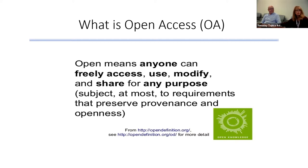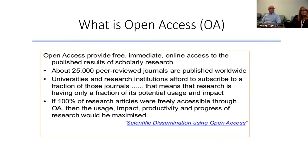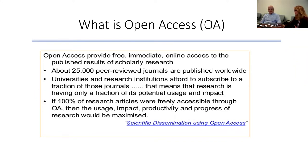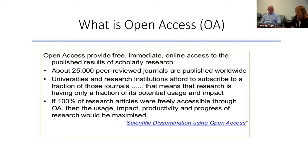There are about 25,000 peer-reviewed journals out there, and no library could ever own subscriptions to all of them. So you're at the mercy of your library as to whether you can access an article. If the library doesn't own a subscription to that journal, you have to buy access, and some of those are really expensive. This is the reason people are talking about making data available to everyone rather than requiring payment for subscriptions or individual articles.